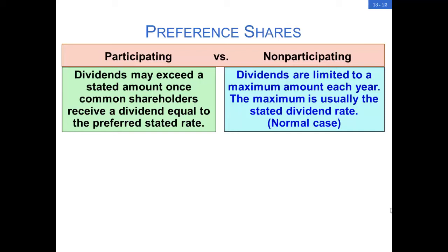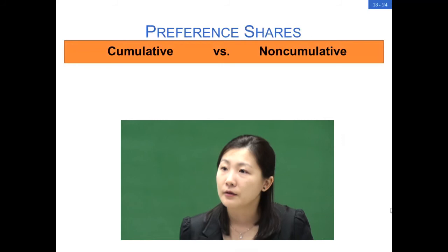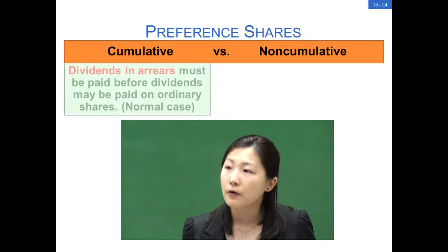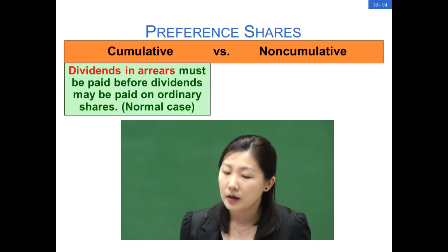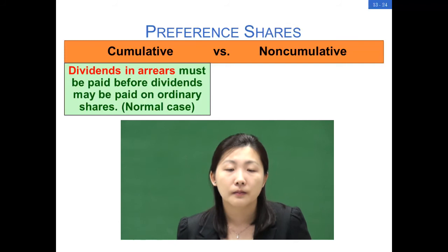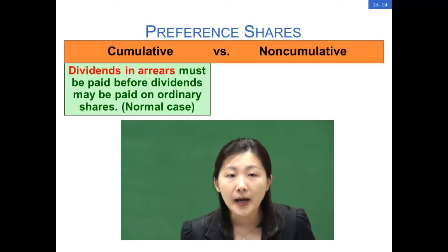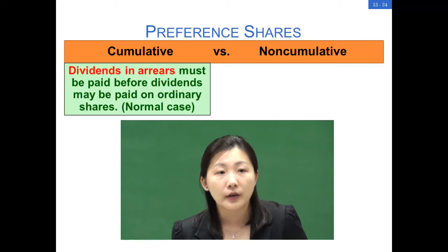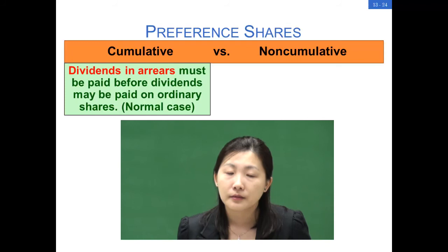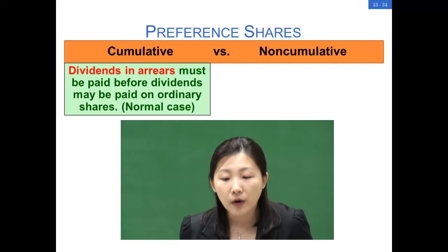Another special feature for preference shares is cumulative or non-cumulative. Cumulative preference shareholders have the right to receive both the current as well as all prior period unpaid dividends before the corporation can distribute any dividends to the ordinary shareholders. When the preference shares are cumulative and the directors do not declare a dividend, the unpaid dividend is called a dividend in arrears and must be disclosed in the financial statements. Most preference shares are cumulative. Non-cumulative preferred stockholders have no right to prior period unpaid dividends.